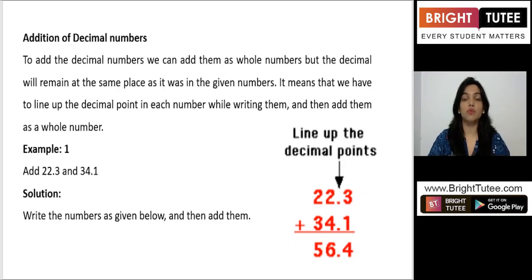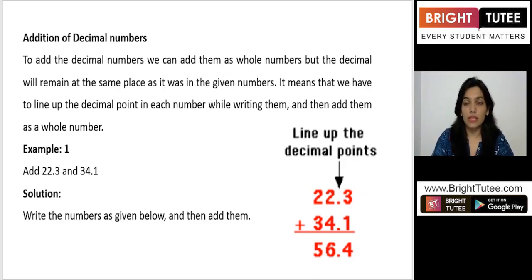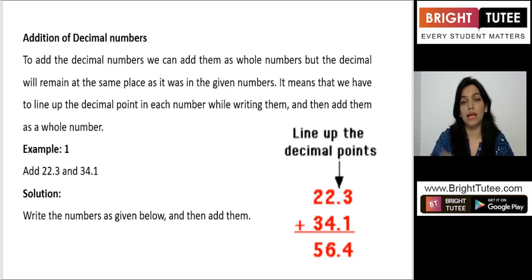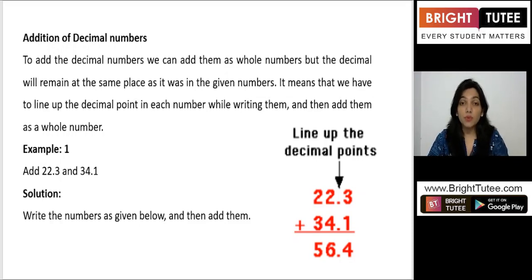When we say adding decimal numbers, it means we add them like we add whole numbers, but the decimal point must stay in line. The decimal numbers should be placed exactly as seen in the place value chart. So we have to line up the decimal point in each number while writing them, and then add them as whole numbers.